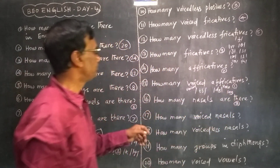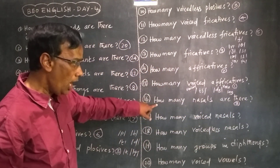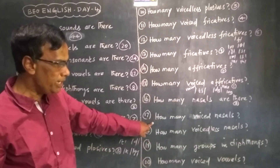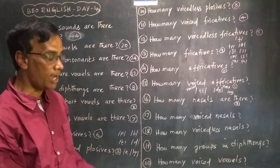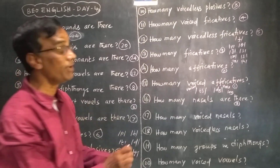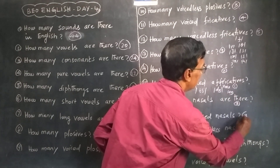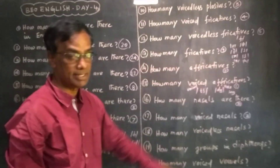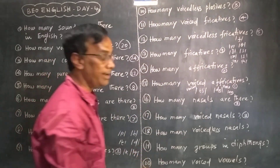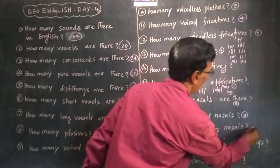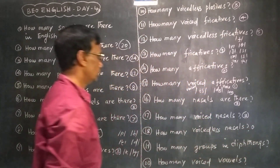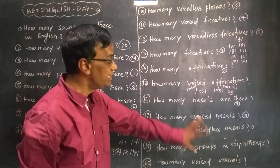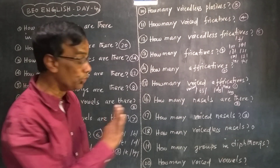This is the voiceless one. How many nasals are there? There are three nasals. All three nasals are voiceless — the answer is 3. How many voiced approximants? There is none, so 0. How many groups in diphthongs? Diphthongs have 3 groups.